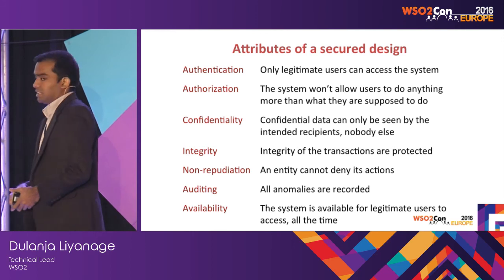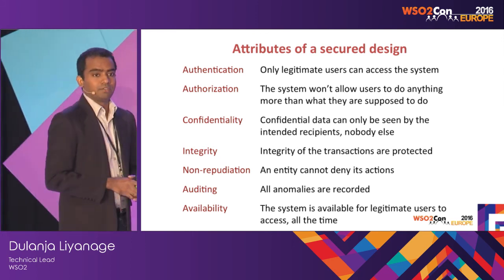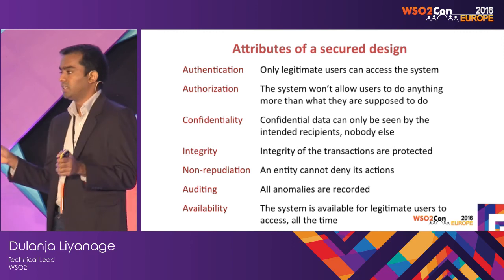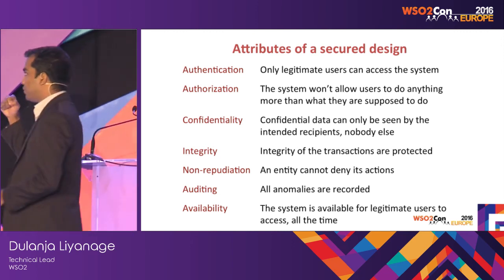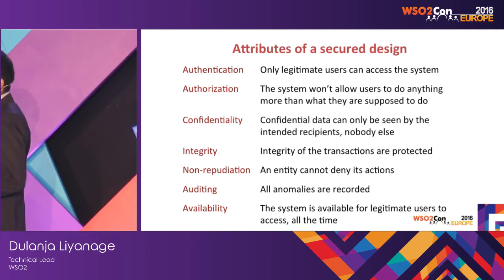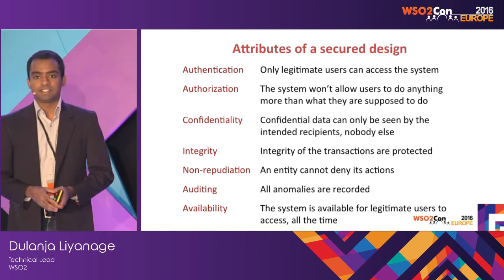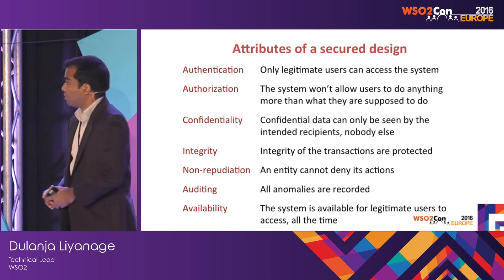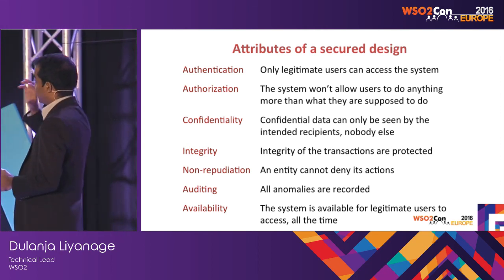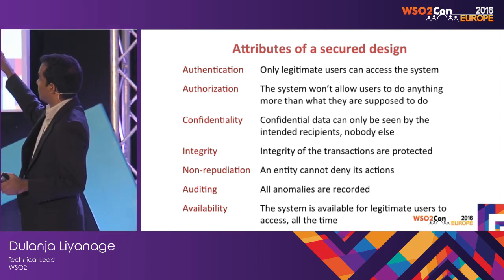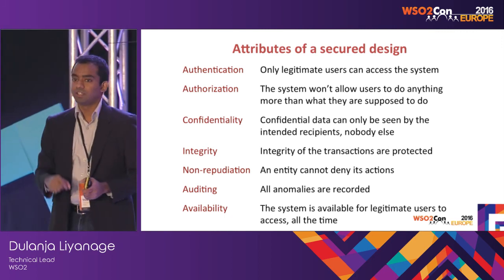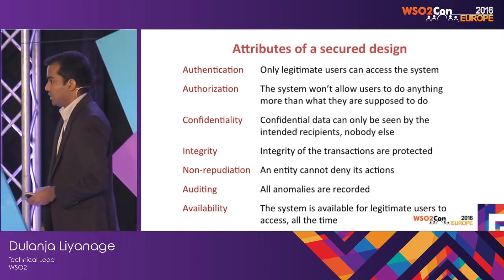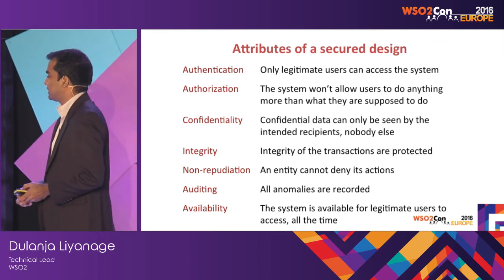Availability — the system should be available for all legitimate users at all given times. If you have these attributes in your API, then we can call it a secured API. Within this session, we are concentrating mainly on authentication and authorization aspects, and we will briefly go through the others at the very end.